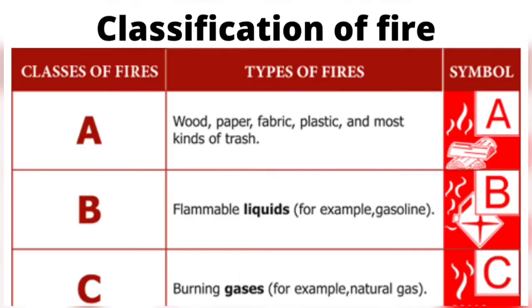Class A: solids. This type of fuel could be paper and cardboard, common in offices and manufacturing. It could be furniture, or fixtures and fittings. It could even be the structure of the building.